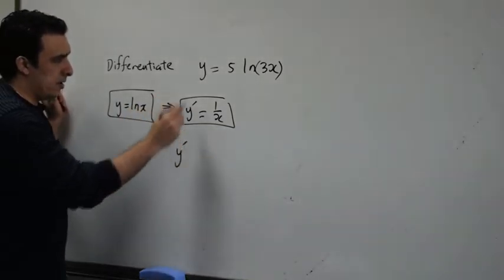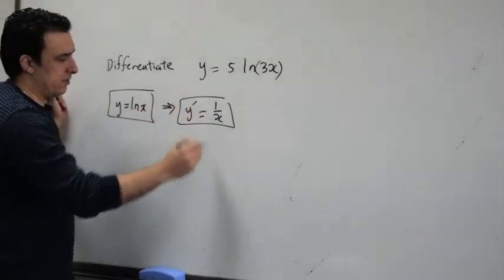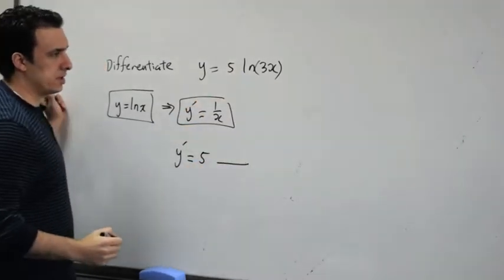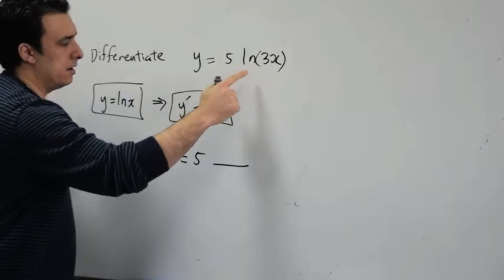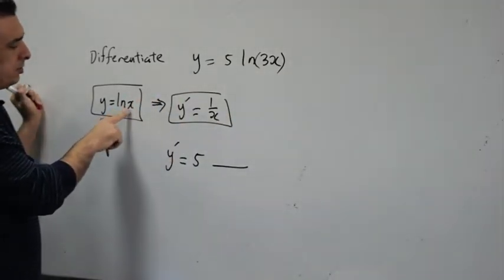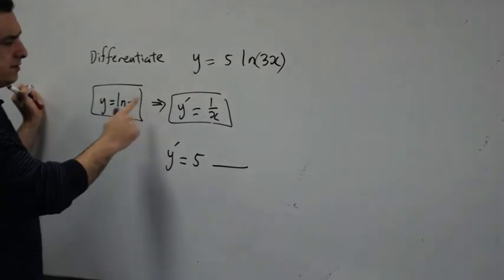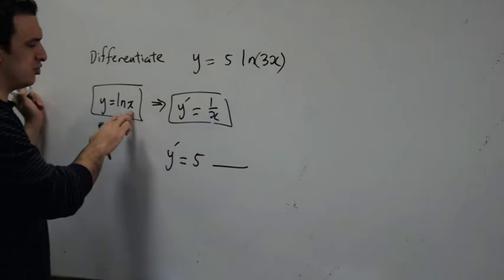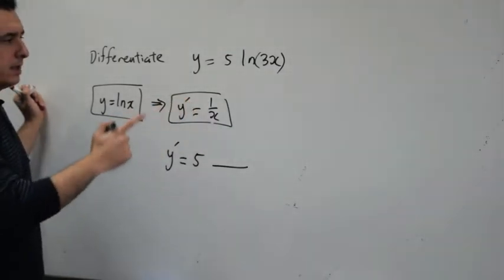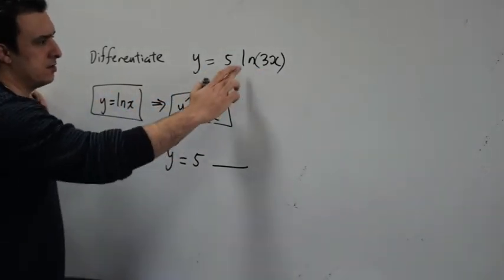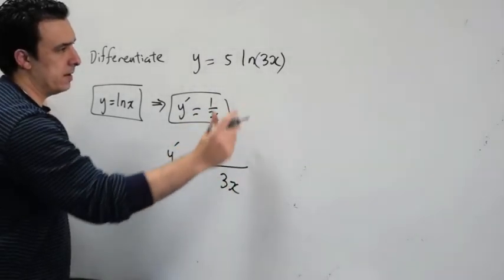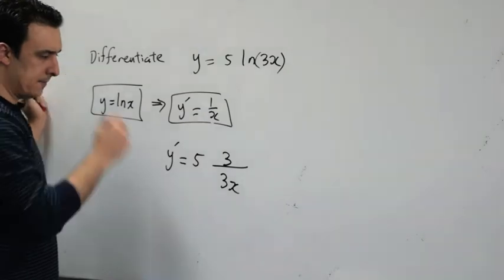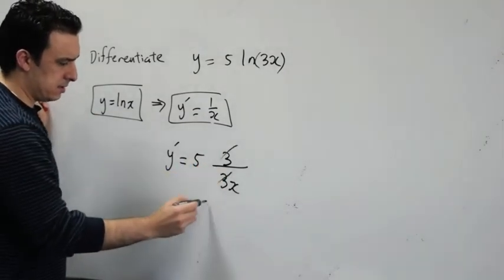So, let's find y prime. The 5 goes down. The derivative of a natural log goes like this — you put the x in the bottom and its derivative on the top. Same way here: the 3x goes to the bottom, and its derivative — the derivative of 3x is 3 — goes to the top. And you cancel this with this, and the answer is 5.